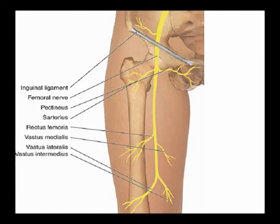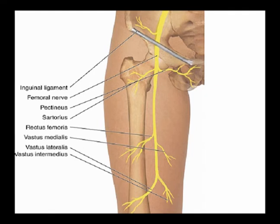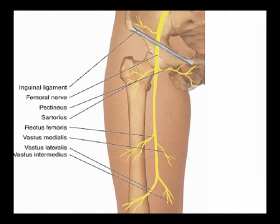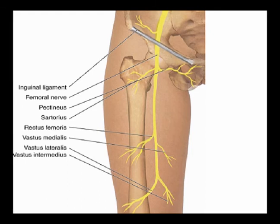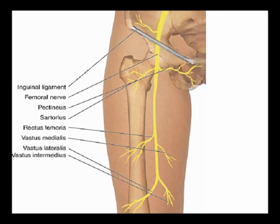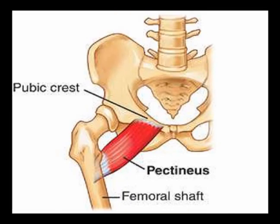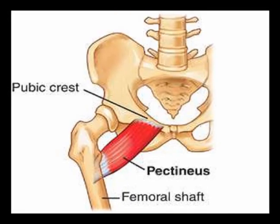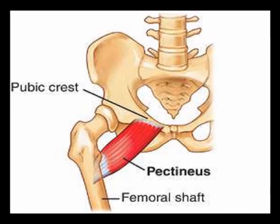The anterior branch of the femoral nerve gives off the anterior cutaneous branches to provide somatosensory information via the intermediate femoral cutaneous nerve and the medial femoral cutaneous nerve. The anterior branch also provides muscular branches to the pectineus muscle.